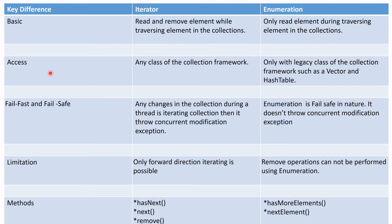Any class — any package or class — can access the Iterator through the collection framework. But Enumeration can only be accessed through Vector and HashTable, because these are the legacy classes. So we can say only the legacy classes can access Enumeration.